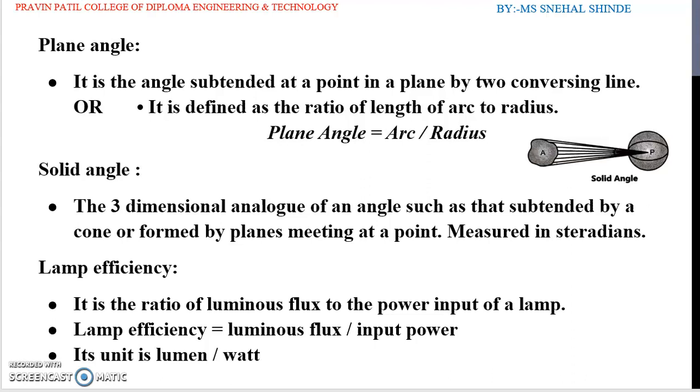Next definition is lamp efficiency. It is the ratio of luminous flux to the power input of a lamp. It is expressed in lumens per watt. Say 100 watt lamp has luminous flux of 1630 lumens. Luminous efficiency is equal to the lumens per watt. 1630 divided by 100 is equal to 16.3 lumens per watt. As this the lamp efficiency or the luminous efficiency is calculated. Lamp efficiency equals to luminous flux divided by input power. This lamp efficiency is also called as luminous efficiency. Thank you.